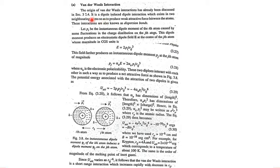We will first discuss van der Waals interaction. The origin of van der Waals interaction has already been discussed when we studied van der Waals forces and bonds. It is a dipole-induced dipole interaction which exists in two neighboring atoms so as to produce a weak attractive force between them. These interactions are also known as dispersion bonds.